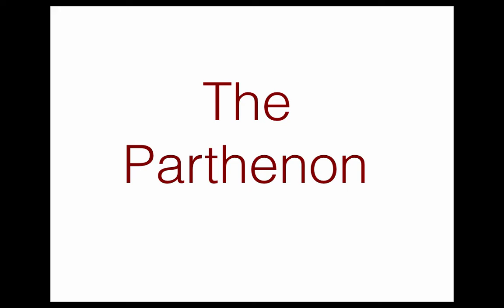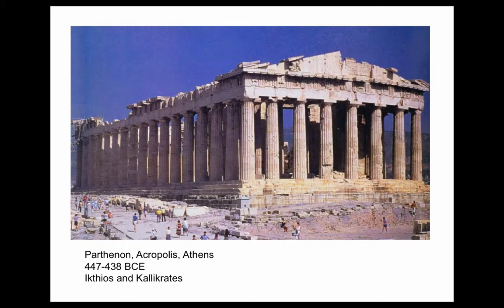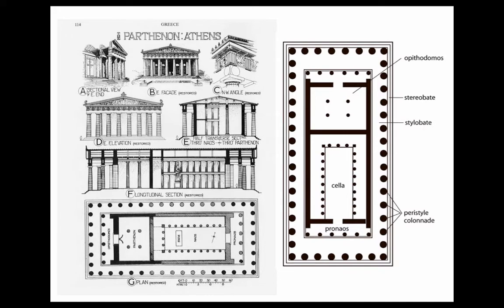Our key building for the Greek temple is the Parthenon, located on the Acropolis in Athens, Greece. Here's the Parthenon — not in good shape, but it's there to this day. It's a typical Greek temple of the Doric order in its refined state: columns on the outside, a cella, and an opisthodomos. The base is the stylobate, and the steps — which are too tall to step up — form the stereobate.